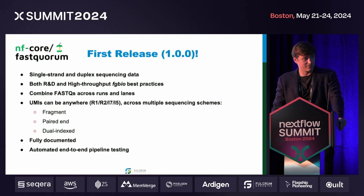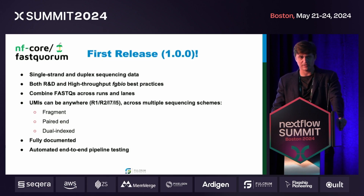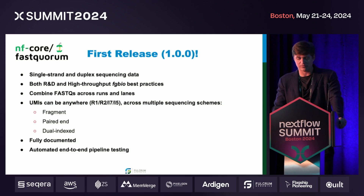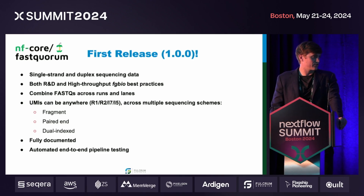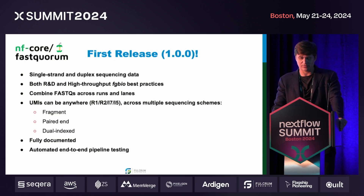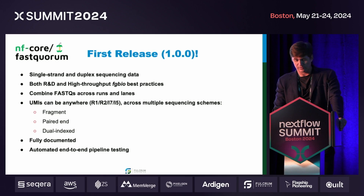With the help of some very responsive and helpful nf-core maintainers, volunteers, and members, FASTQ Quorum had its first official release last night. It supports single-strand and double-stranded sequencing data, both the R&D and high-throughput FGBIO best practices, combining FASTQs across runs, lanes, or splits — up to dual-index paired-end runs and a whole swath of other schemes as well.